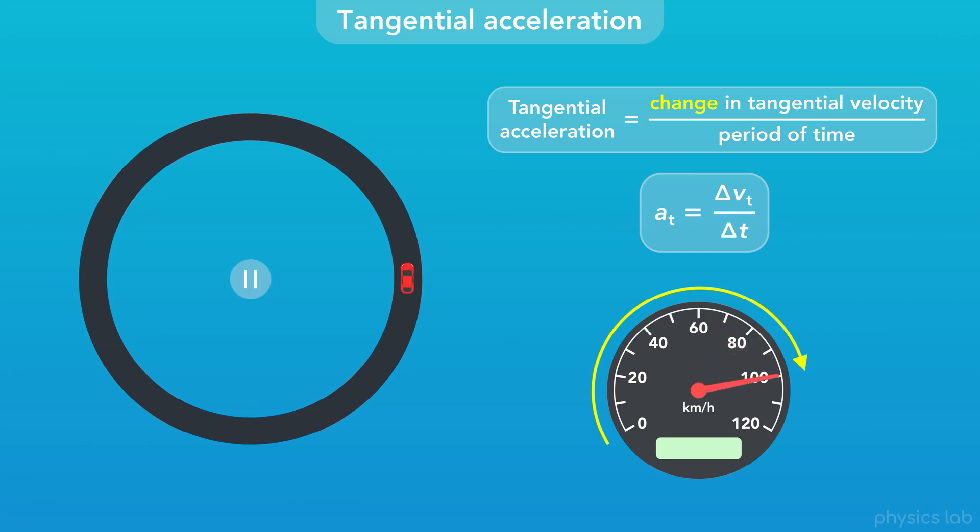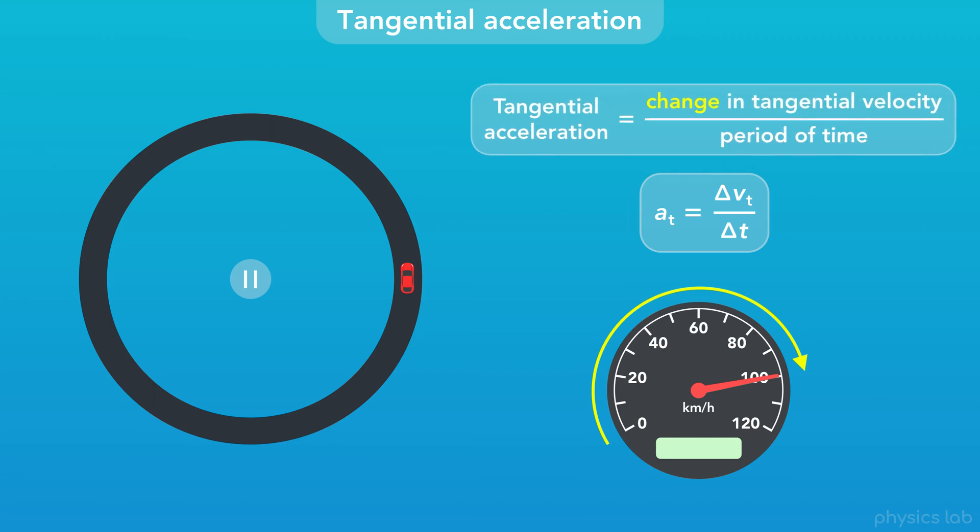It's important to remember that the term acceleration means a change in velocity, not necessarily an increase in velocity. If a car has a velocity of 100 kilometers per hour and it slows down, that's also considered acceleration because it's a change in velocity. In that example, the acceleration would be negative, but it's still considered acceleration, just like velocity can be positive or negative.